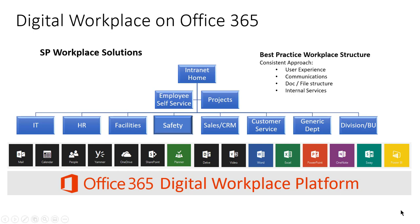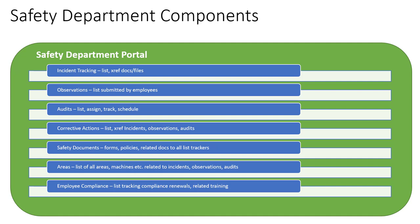SP Safety is an environmental health and safety application that provides full automation and a next-generation digital workplace portal for the EHS function. Our safety department portal includes incident tracking, observations, audits, inspections, corrections, corrective actions linked to incidents and observations and audits, and safety documents management.